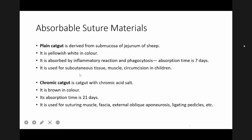When plain cat gut is coated with chromic acid salt, it is known as chromic cat gut. It is brown in color with an absorption time of 21 days, compared to 7 days for plain cat gut. It is used for suturing muscle, fascia, external oblique aponeurosis, ligating pedicles, etc.